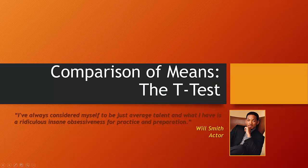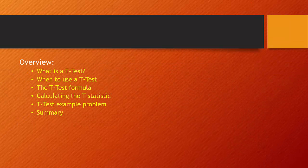Hi, and welcome back. Now that we have a good understanding of non-parametric measures of association and understanding how to test hypotheses using the chi-square statistic, we're going to move on and talk about independent variables that are dichotomous and dependent variables measured at the ratio and ordinal level. We're going to talk about the t-test — what it is, when to use it, the formula and how it's calculated, and we'll walk through an entire calculation for the t-statistic using an example problem.